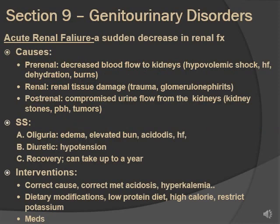Acute renal failure is a sudden decrease in renal function. Unlike chronic renal failure, which happens over time and is not easily reversible, acute renal failure can be corrected. Causes are divided into three categories: pre-renal — anything that causes decreased blood flow to the kidneys, like hypovolemic shock, heart failure, dehydration, and burns. Renal — direct kidney damage from trauma or kidney diseases like glomerulonephritis. Post-renal — anything that compromises urine flow, like kidney stones, BPH, or tumors.